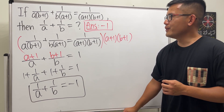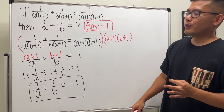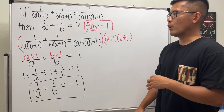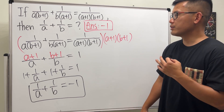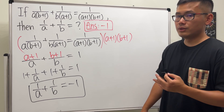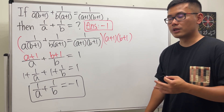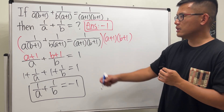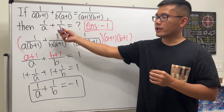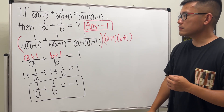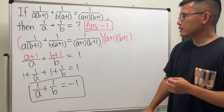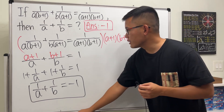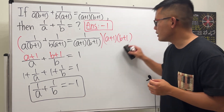For this kind of question, you're not supposed to find out what a or b is individually. You just have to know how to work this out algebraically — just do the algebra and answer what the question is asking. That's all. This is the first way, and I'll show you another way as well.